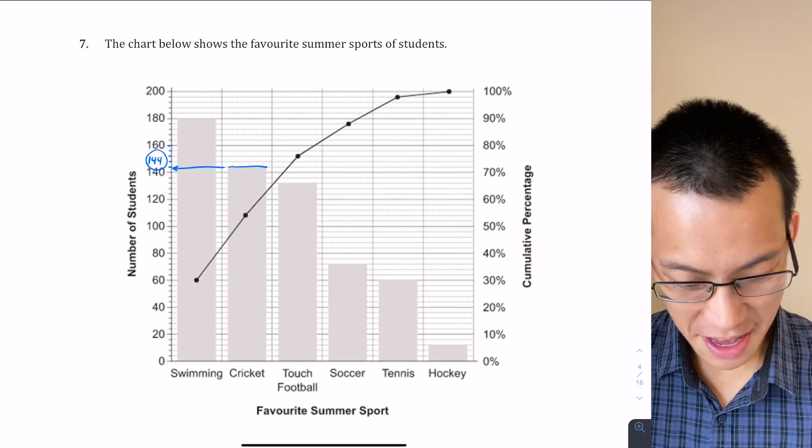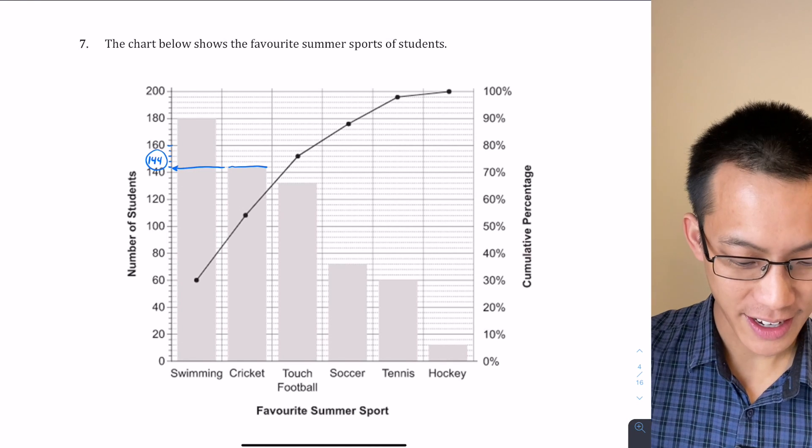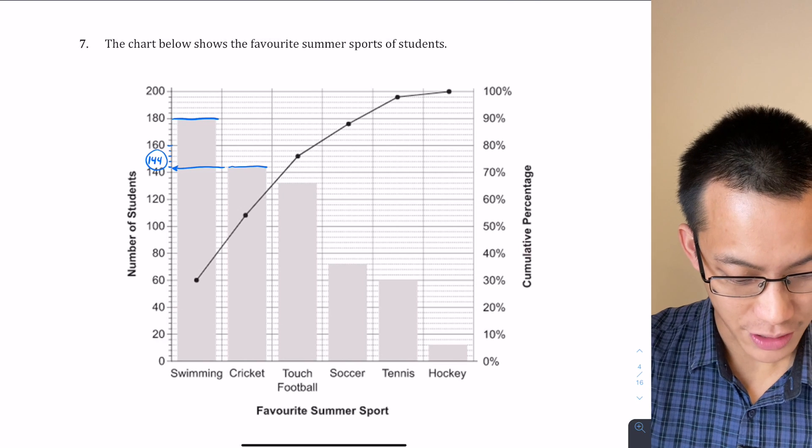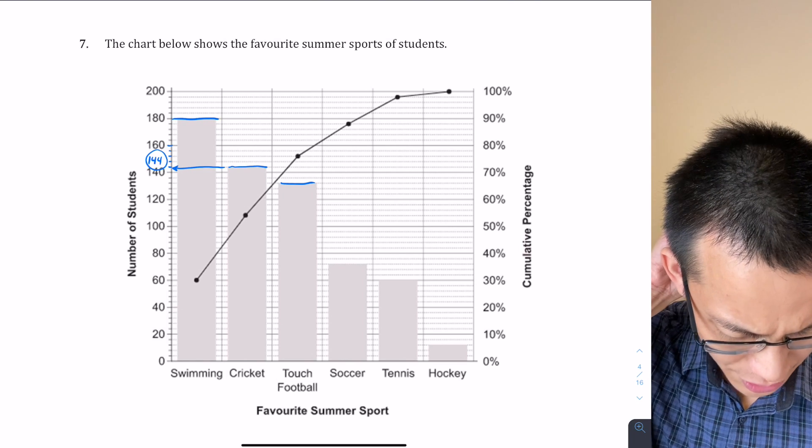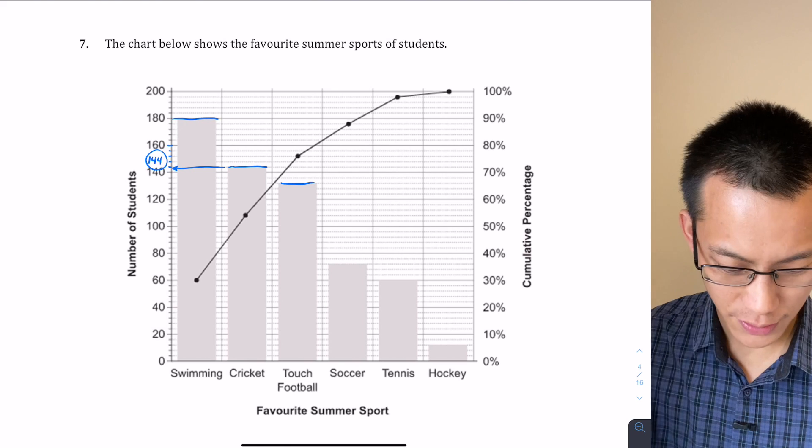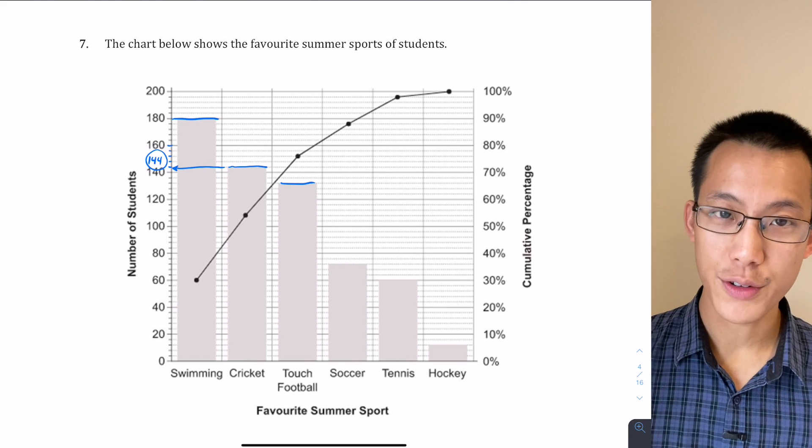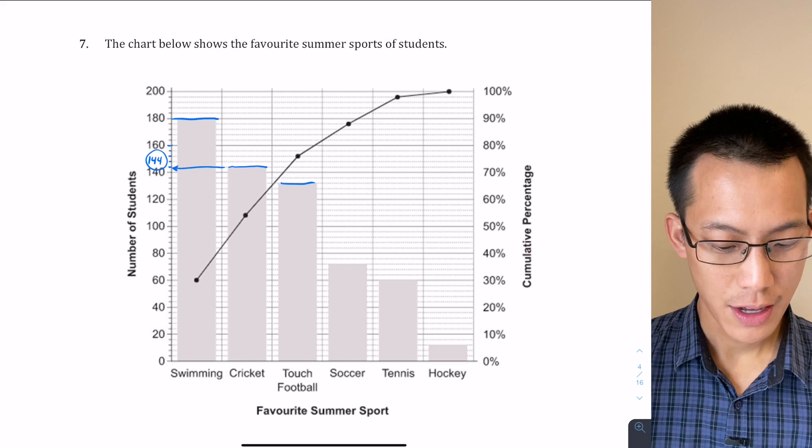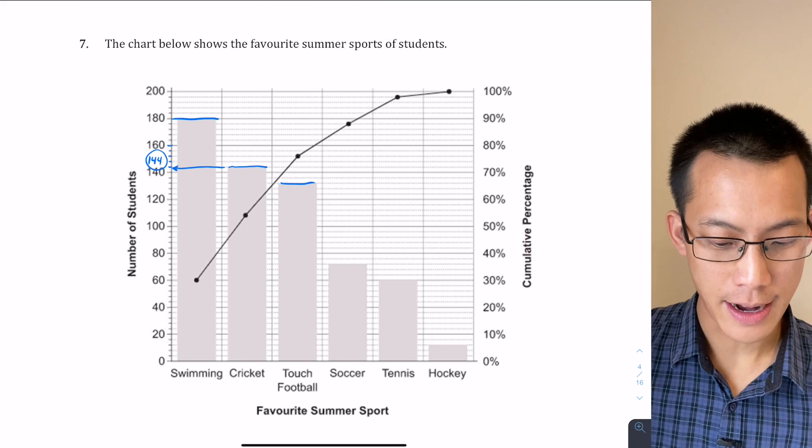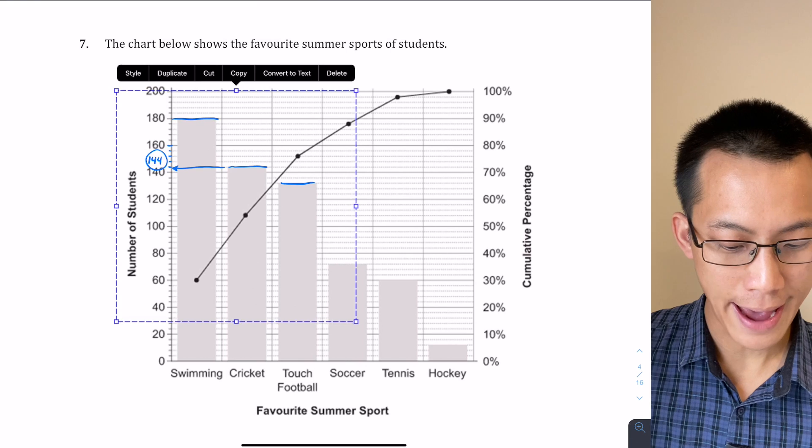But that's a very long process to go through, because they don't give you a total—you have to calculate it. You've got to read off this bar, which is 180, you've got to read off this bar, which is 132 by the looks of it, you've got to read off every single one, add them all up, and then divide 144 by that total. You can do it, you'll get the right answer, but there is a much faster way if you remember how a Pareto chart works.